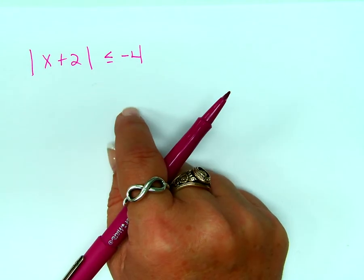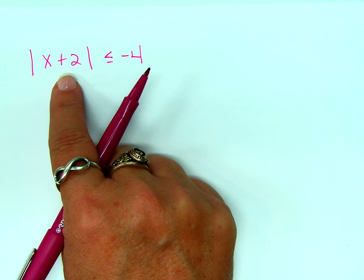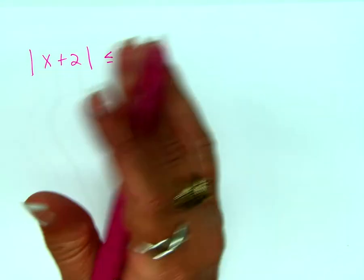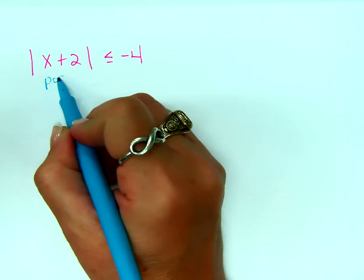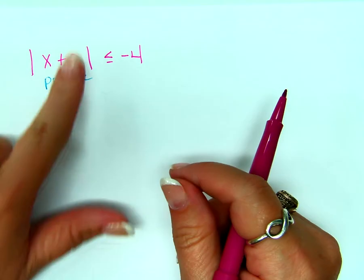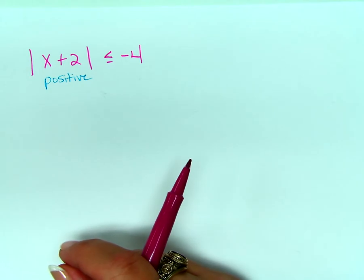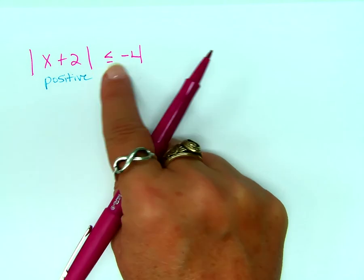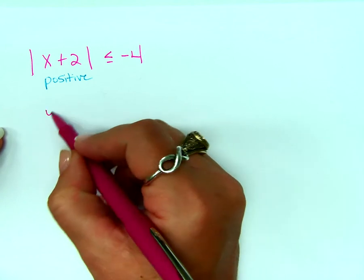Tell me what happens when we take an absolute value. What kind of number do we get? Always? Yes, right? We always get a positive or a zero, but we're not talking about that right now. This number right here is always going to be a positive number. Do you agree with that? Tell me when a positive number will be less than or equal to negative 4. A positive number will never be less than or equal to negative 4. So how am I going to write my answer on this? No solution.